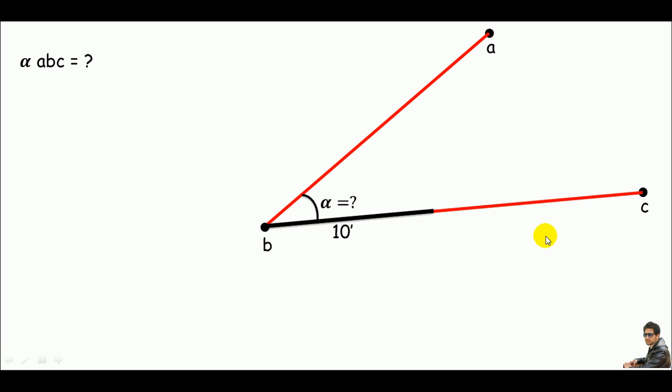Now, we'll take a perpendicular from line BC toward line AB, like in this position. Say the length of this line is 7 feet. Make sure this is perpendicular, okay? This is making an angle of 90 degrees.